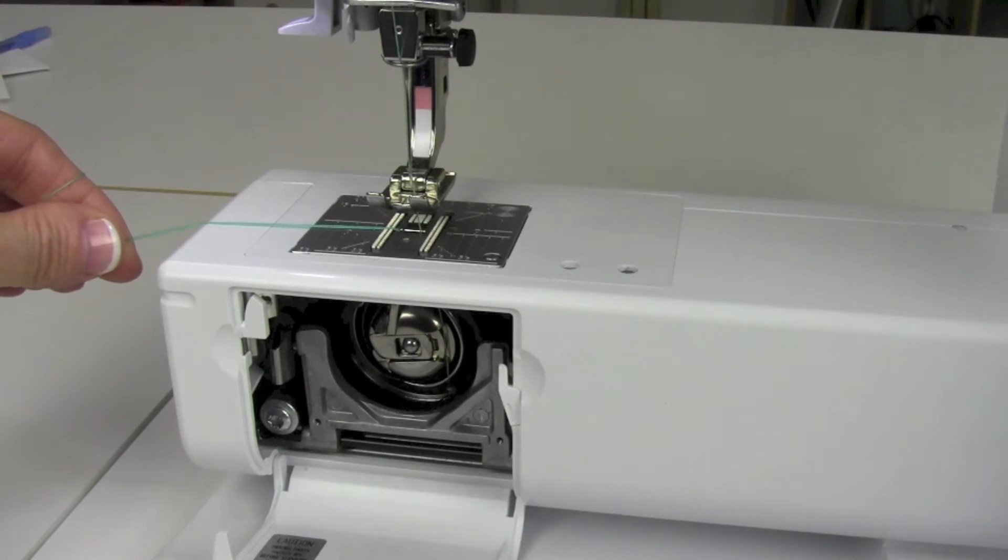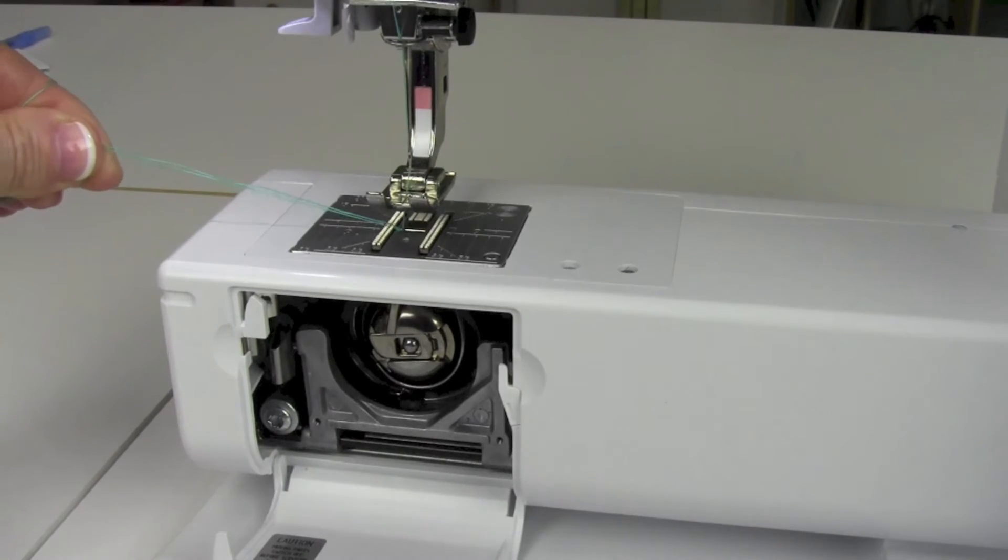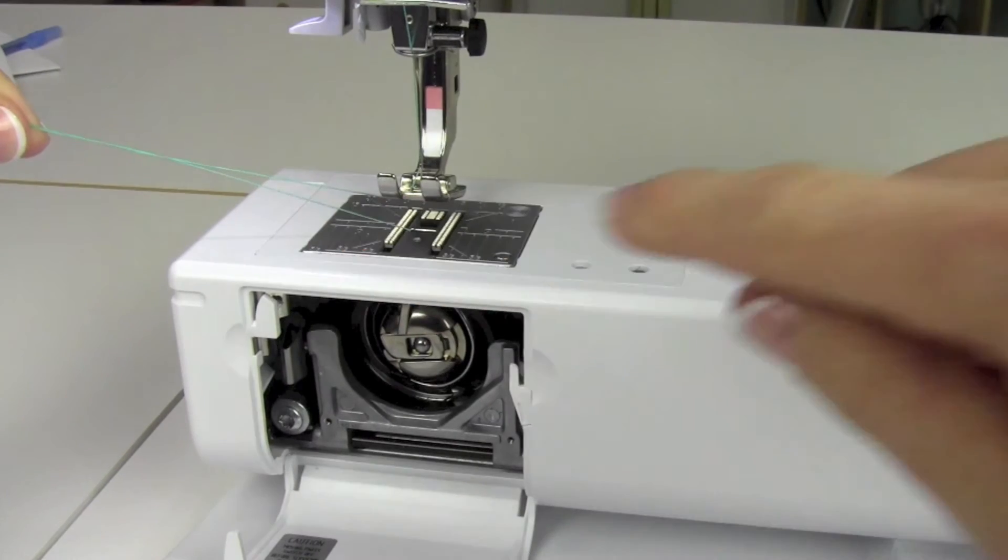It's going to cross in front of the bobbin case and then come back up. When you look at your threads here, they now have a twist in them.